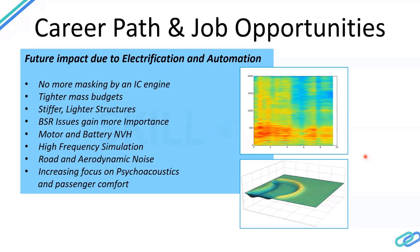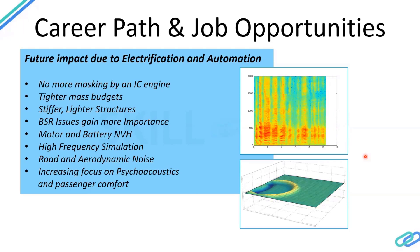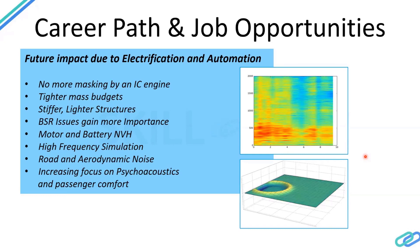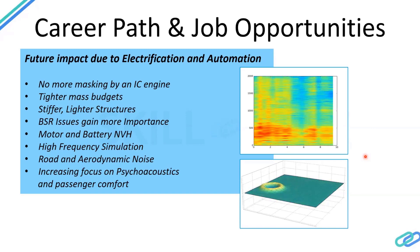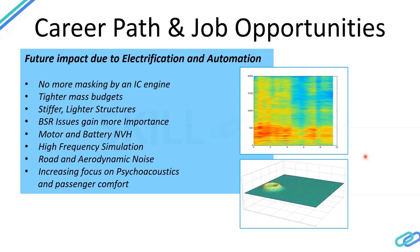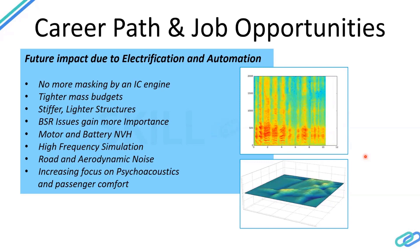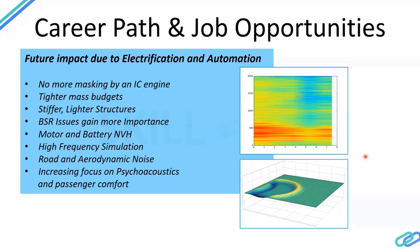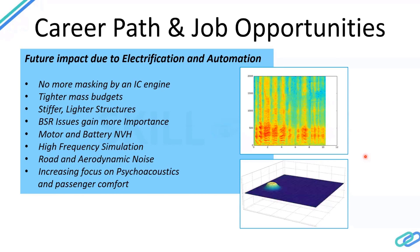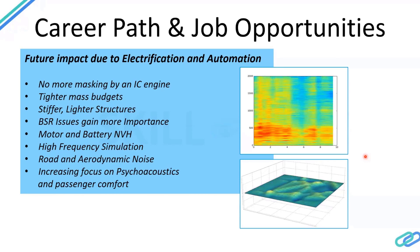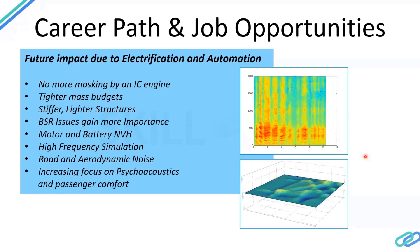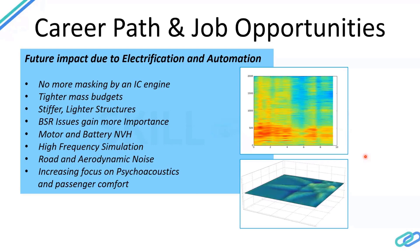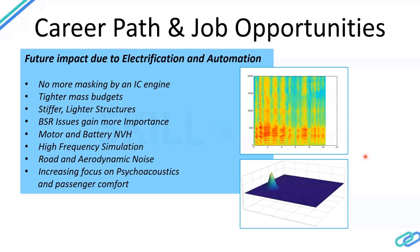Without masking, NVH becomes even more critical. We also have tighter mass budgets due to concern about the range of electric vehicles, so we can't add mass freely. There is also a trend toward stiffer, lighter structures — carbon fibers and organic structures. These lighter, stiffer structures increase the possibility of noise radiation, making it increasingly difficult to meet NVH targets. This drives more importance for motor and battery NVH, which is an exciting and evolving branch of the field.